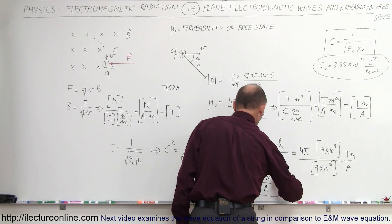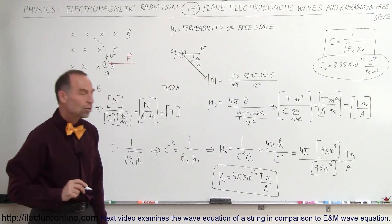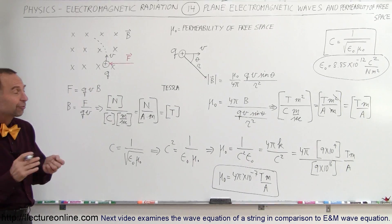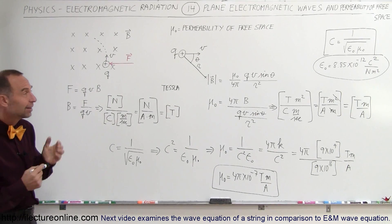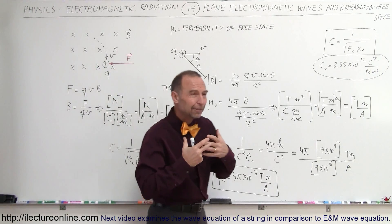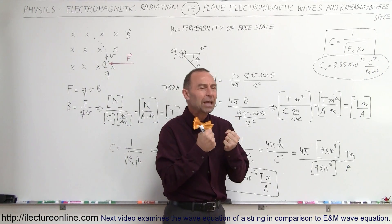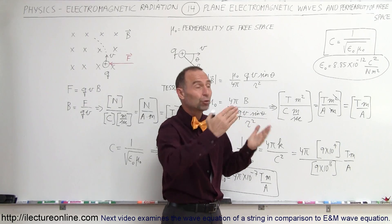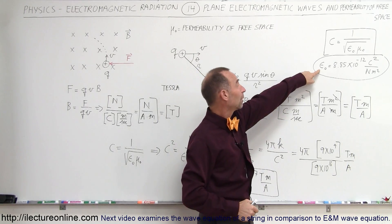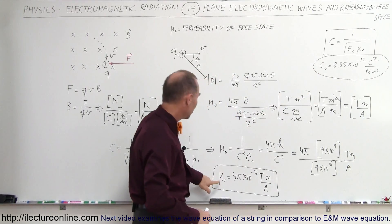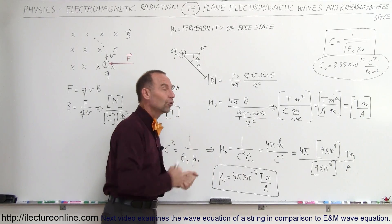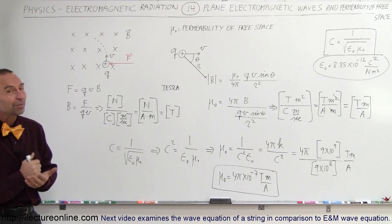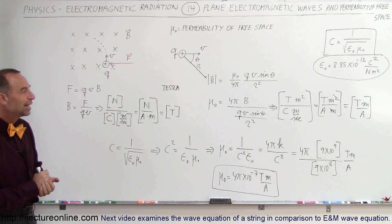And there we go — that's how we determined the units and the magnitude of mu sub-naught, the permeability of free space. We can now see that the two constants describing the properties of space — the permittivity and the permeability of free space — control how fast electromagnetic radiation can move through space. Now we know a little bit more about electromagnetic radiation.